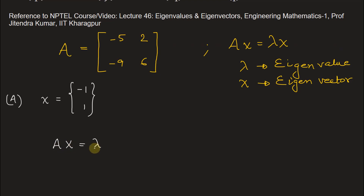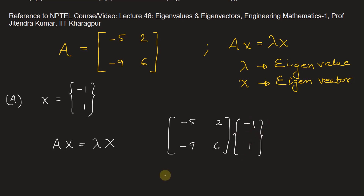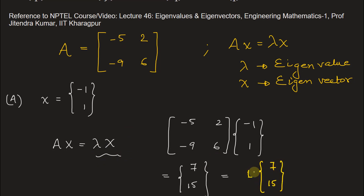It has to satisfy the condition Ax = λx. So first we find Ax: matrix A = [[-5, 2], [-9, 6]] multiplied by x = [-1, 1]. This gives: first entry = (-5)×(-1) + 2×1 = 5 + 2 = 7, and second entry = (-9)×(-1) + 6×1 = 9 + 6 = 15. So Ax = [7, 15]. Since x was [-1, 1] but we are getting [7, 15], these two vectors do not match. Therefore option A is incorrect.